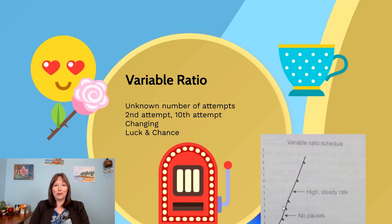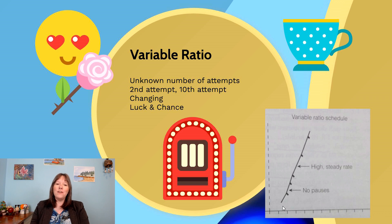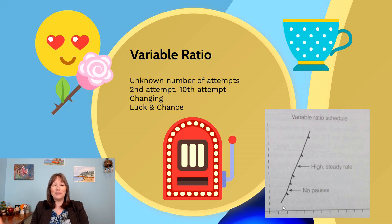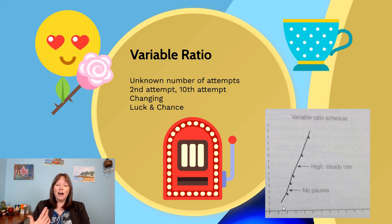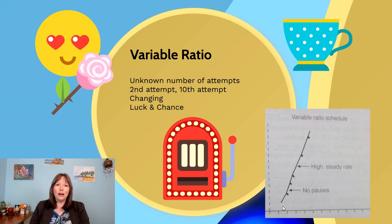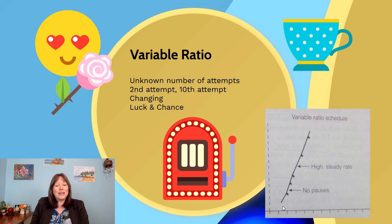In comparison, the variable ratio reinforcement schedule means reinforcement is not consistent — sometimes it's the third time, sometimes the seventh, sometimes the 32nd time that you get rewarded. Ratio still has to do with the number of times you perform a behavior, but it's an unknown number of attempts. It could be very quick sometimes and very long other times, and it changes with every trial.